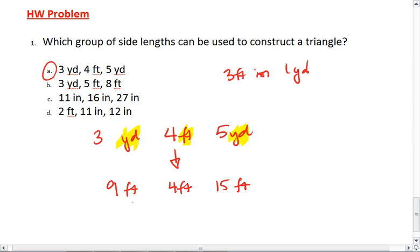Now we're comparing the numbers 9, 4, and 15. Our longest side is 15, we have sides 9 and 4. But we should see that 9 plus 4 is 13. So these sides will never meet.